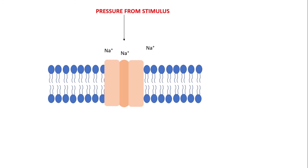When we have a stimulus — such as heat or pressure, in this case pressure — this causes the stretch-mediated sodium ion channel to bend and stretch so that sodium ions can now be transported through to the sensory neuron. This establishes what we call a generator potential.